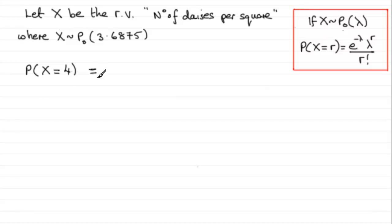e to the minus lambda, so that'd be e to the power minus 3.6875, multiplied by lambda to the power r, so 3.6875 to the power 4, and it's all divided by 4 factorial. So definitely a job for the calculator here.